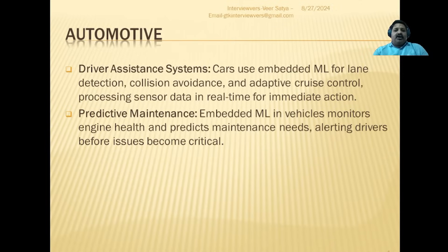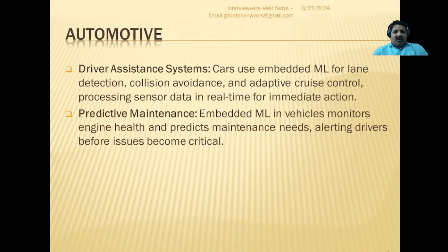Then you have automotive applications — specifically driver assistance systems. Cars use embedded ML for lane detection, collision avoidance, and adaptive cruise control, processing data in real time for immediate action. Based on past data, all these features can be implemented in driver assistance systems with the help of embedded ML.